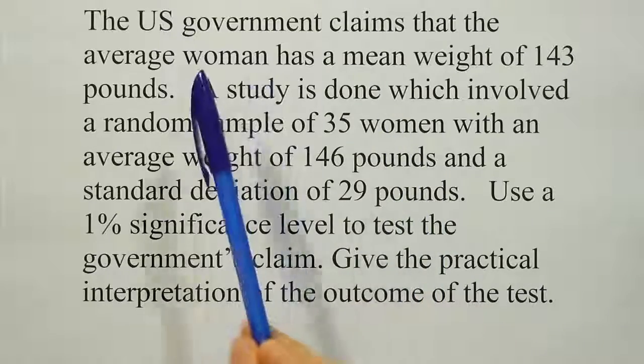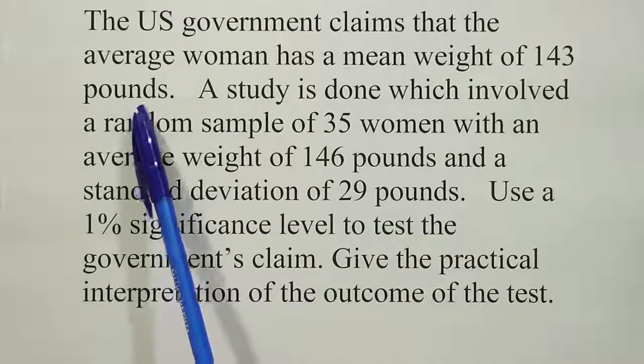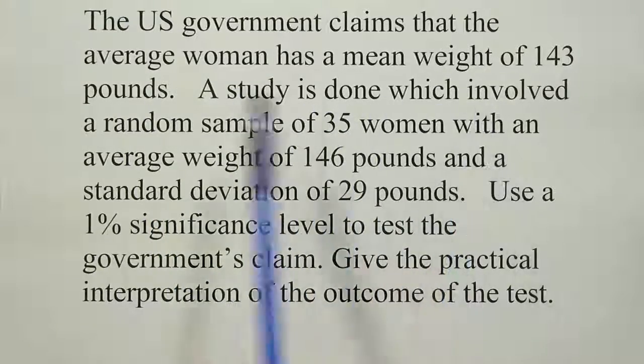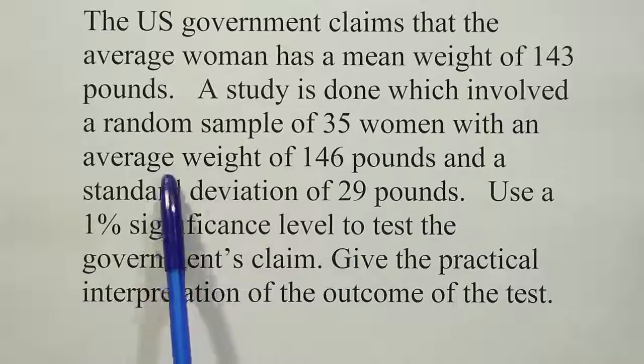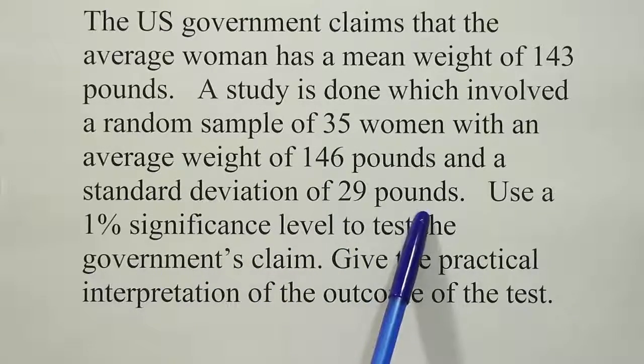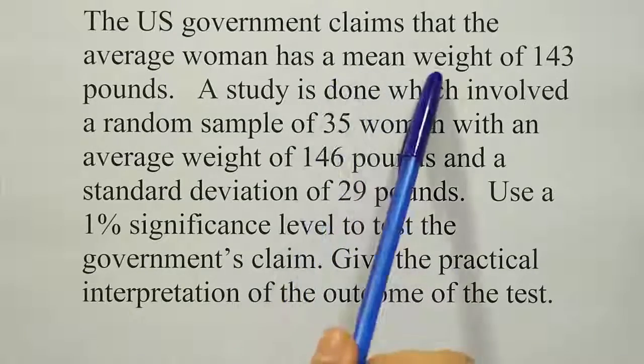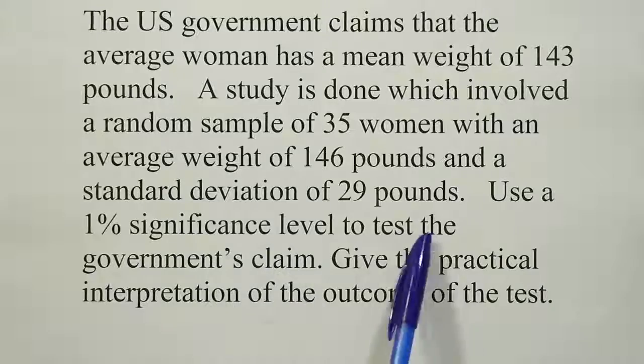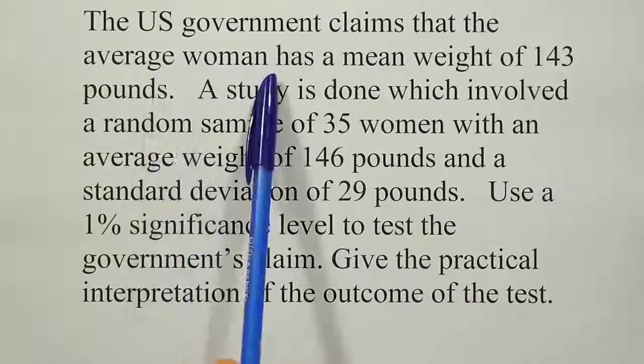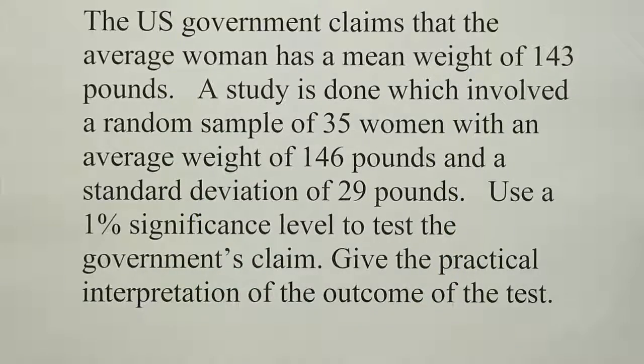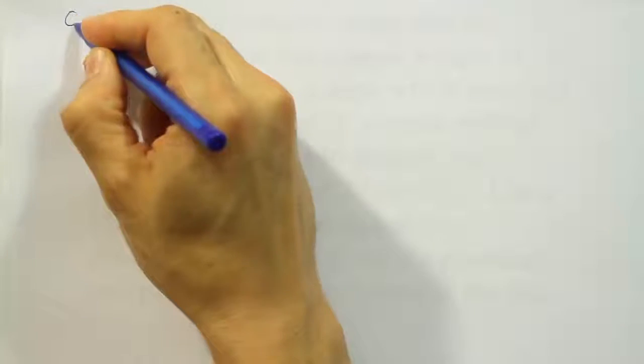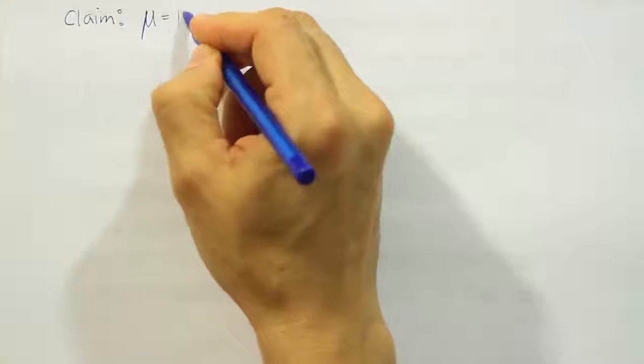When I read the problem, it says the US government claims that the average woman has a mean weight of 143 pounds. It then says a study is done which involved a random sample of 35 women with an average weight of 146 pounds and a standard deviation of 29 pounds. It's a hypothesis test about the mean weight. It says use a 1% significance level to test the government's claim. What's the government's claim? The government claims that the average woman has a mean weight of 143 pounds. So we're going to use that then to start out the problem. The calculator can't tell us the claim, so we have to figure that out ourselves. So I'm going to write this claim down. They're claiming the mean is equal to 143.